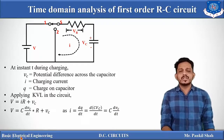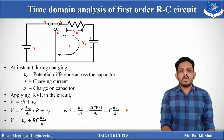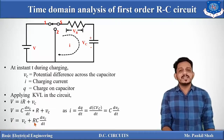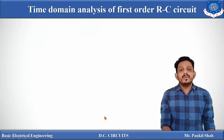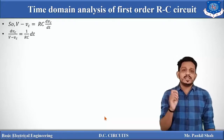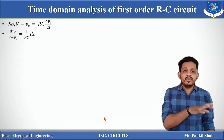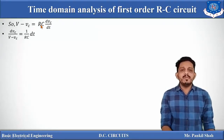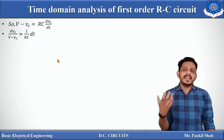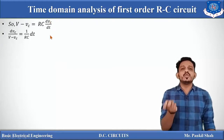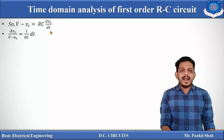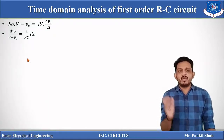Substituting I = C·dVc/dt into the KVL equation gives: V = RC·dVc/dt + Vc. Rearranging, V − Vc = RC·dVc/dt. This is a first-order differential equation that can be solved by the variable separable method. In the variable separable method, dVc and dt should be separated — dVc on one side and dt on the other. So now dVc and dt are separated.